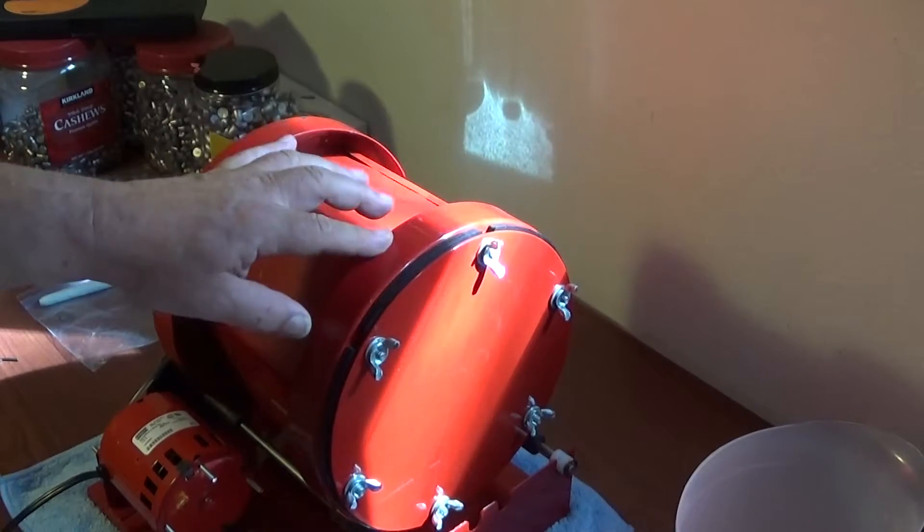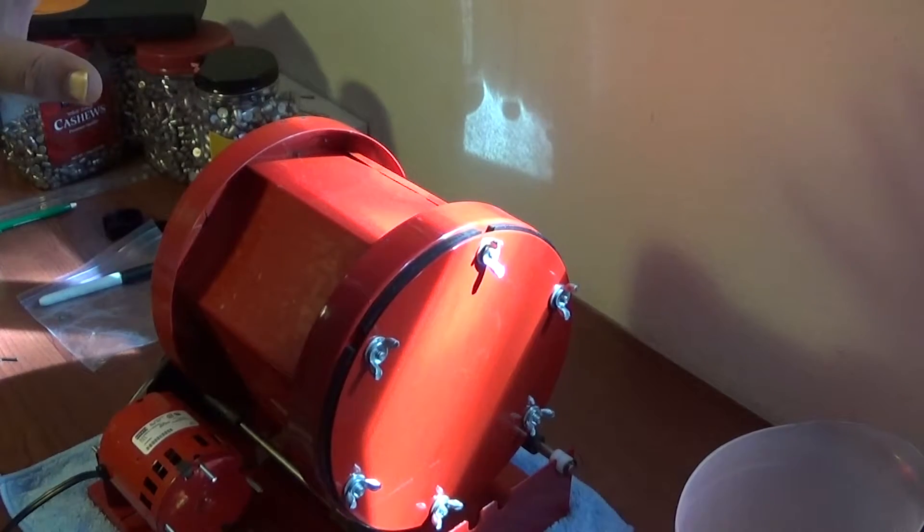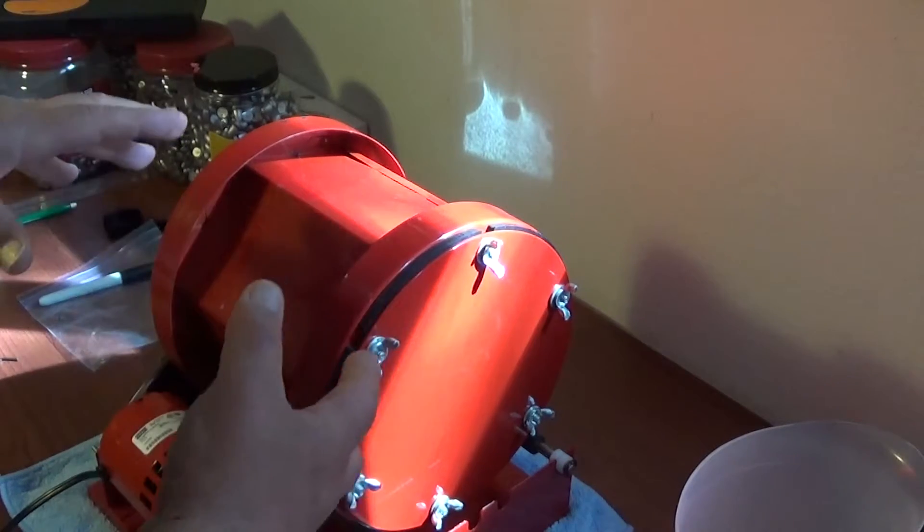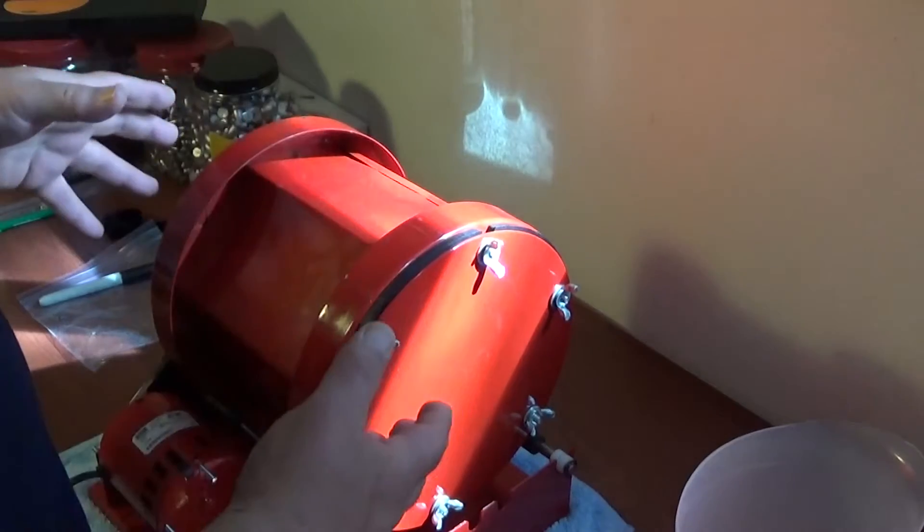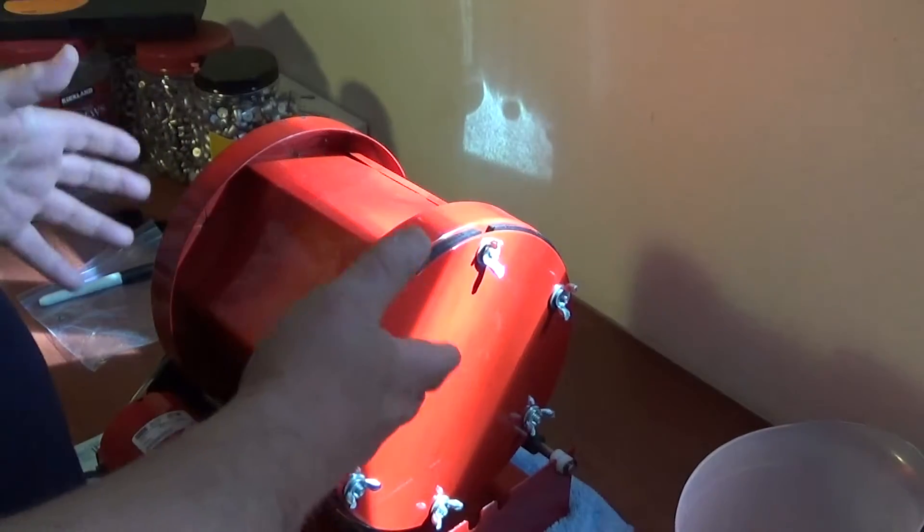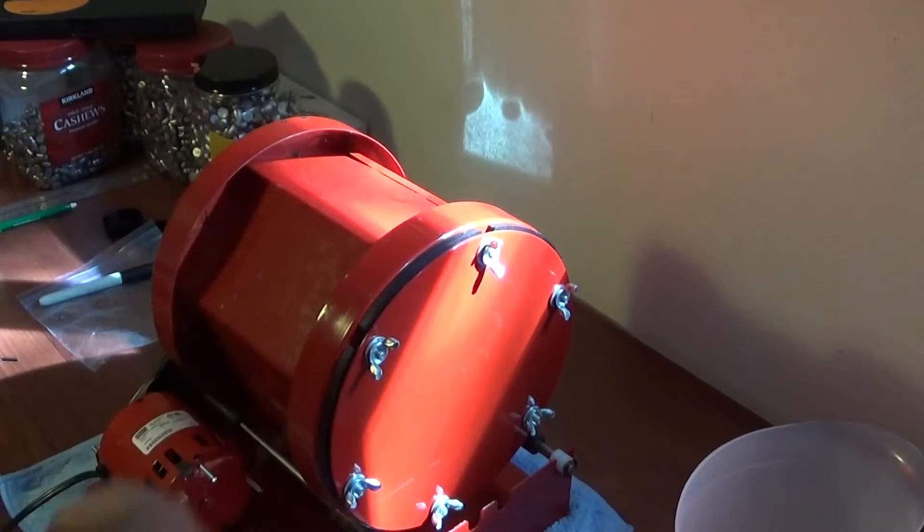And they have two models. One is the slower RPM and one is the higher RPM. And you want the one that has the higher RPM because the one with the lower RPM will take longer. It'll clean your brass just as much as this one will, but it just takes a little longer.